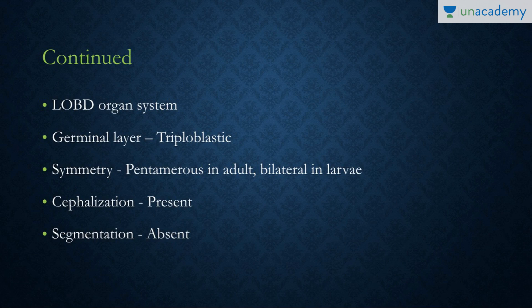They have organ-system level of organization and are triploblastic. The symmetry is very important: the larvae are bilaterally symmetrical and free-swimming, while the adult has radial symmetry — or pentamerous symmetry, to be more precise. Coelomic cavity is present and segmentation is absent.